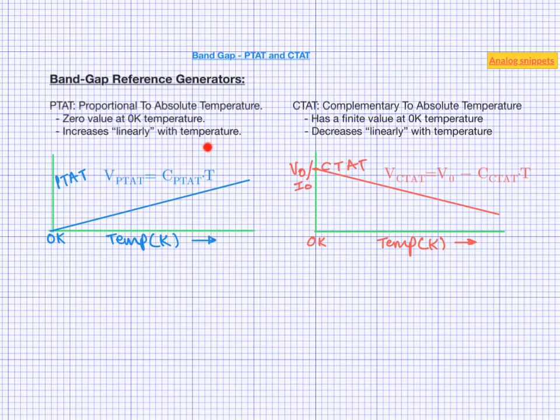A PTAT voltage is simply a constant times absolute temperature. So it is zero at 0 Kelvin and then increases linearly with a constant slope C_PTAT. A CTAT voltage may have a finite value at 0 Kelvin, and then it decreases with a finite slope C_CTAT if temperature is increased. An inversely proportional relation is a non-linear relation which is of the form a constant over temperature.